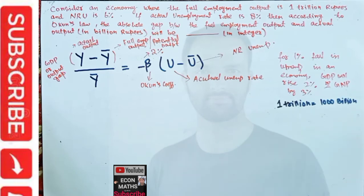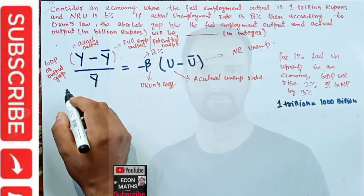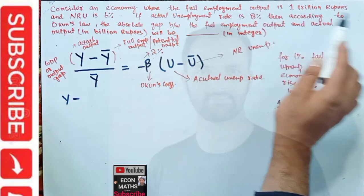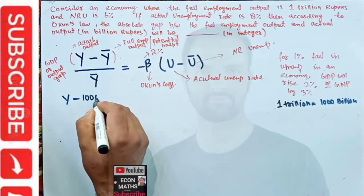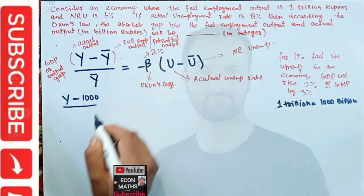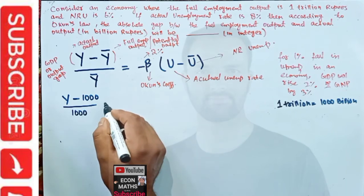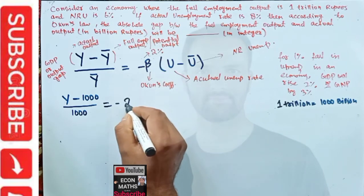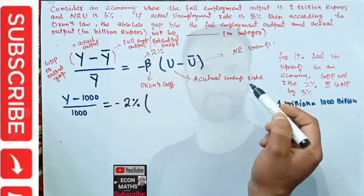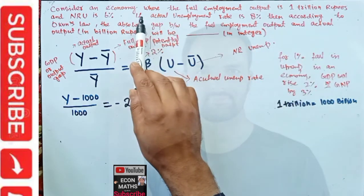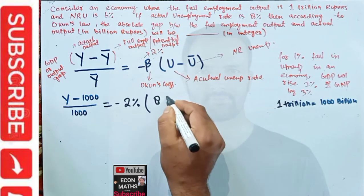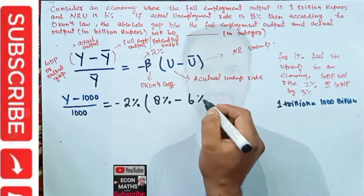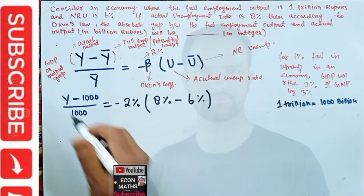Setting up the equation: (y minus 1000) divided by 1000 equals minus beta. The coefficient is 2%, so we write minus 2%. The actual unemployment rate is 8% and the natural rate of unemployment is 6%. So we have: (y minus 1000) / 1000 = minus 2% times (8% minus 6%).